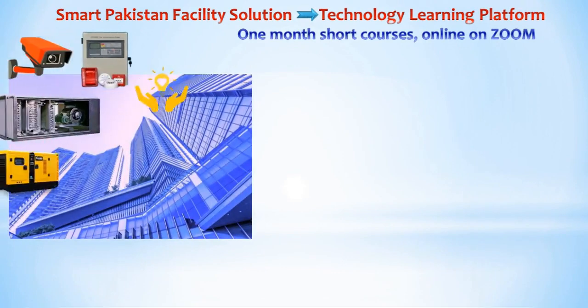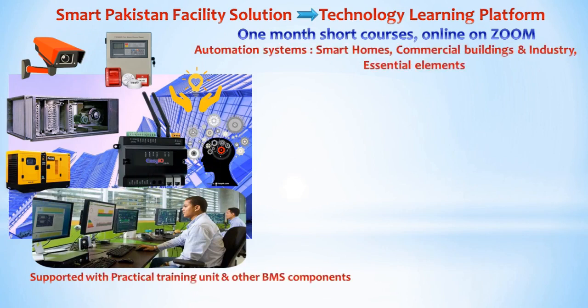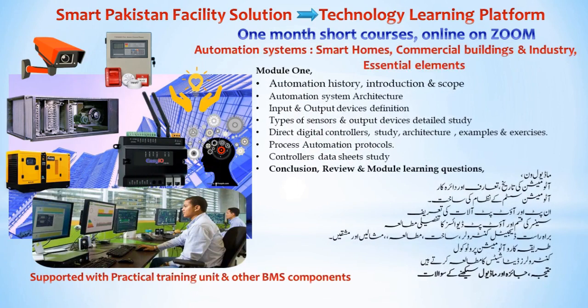Automation essential elements course details: Module 1 consists of automation history, introduction and scope, automation system architecture, input and output devices definition, types of sensors and output devices detailed study, direct digital controllers study, architecture, examples and exercises.